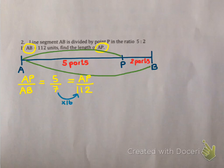What do I have to do to 7 to get 112? Well I have to multiply by 16. Which means I'm going to have to multiply 5 by 16 if I want this fraction to simplify to 5 over 7. Which means that AP is 5 times 16 which is 80 units.